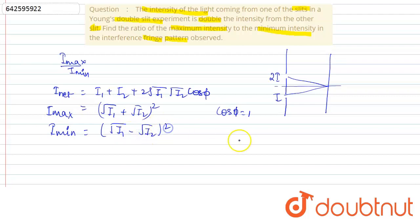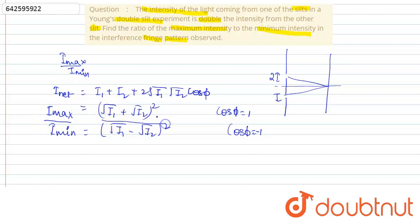Similarly, for I_min, cos φ equals −1, giving I_min = (√I1 − √I2)². To find the ratio, we divide I_max by I_min.